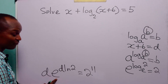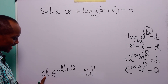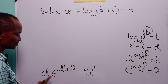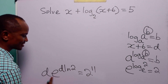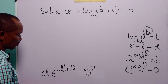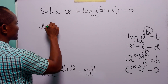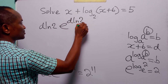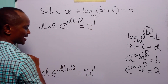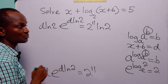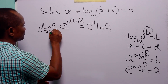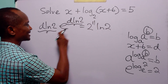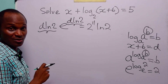To make the multiplier before e exactly the same as what we have in the exponent of e, we will multiply both sides of this equation by ln 2. When we do that, we have d times ln 2 times e to the power d times ln 2 is equal to 2 to the power 11 times ln 2. Now what we have on the left matches the form needed to apply the Lambert W function.